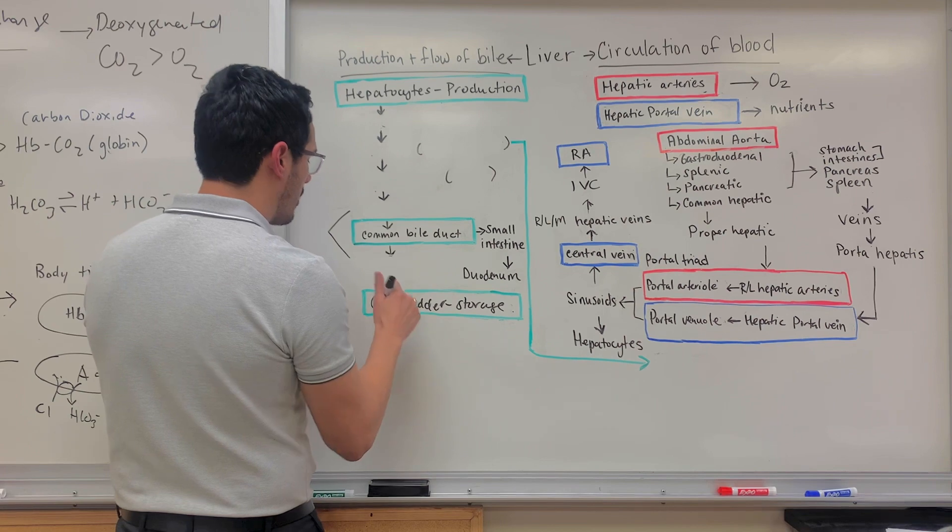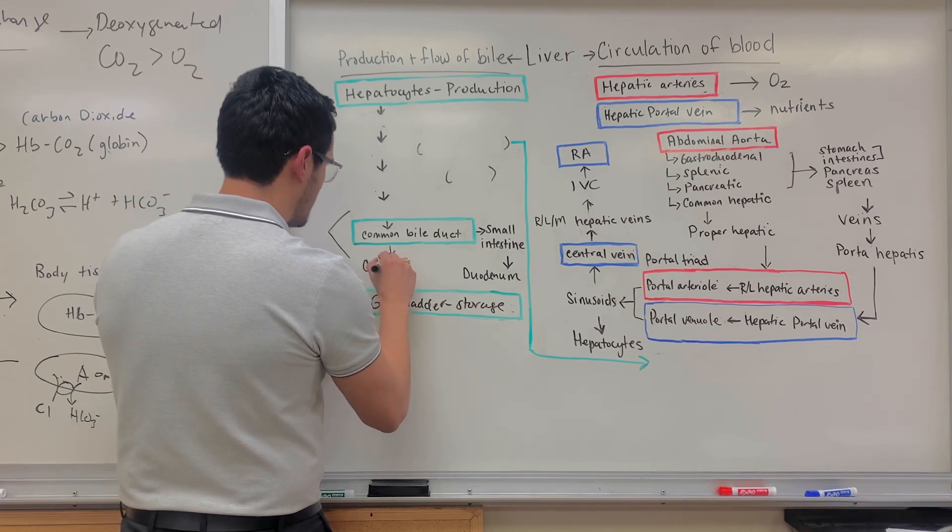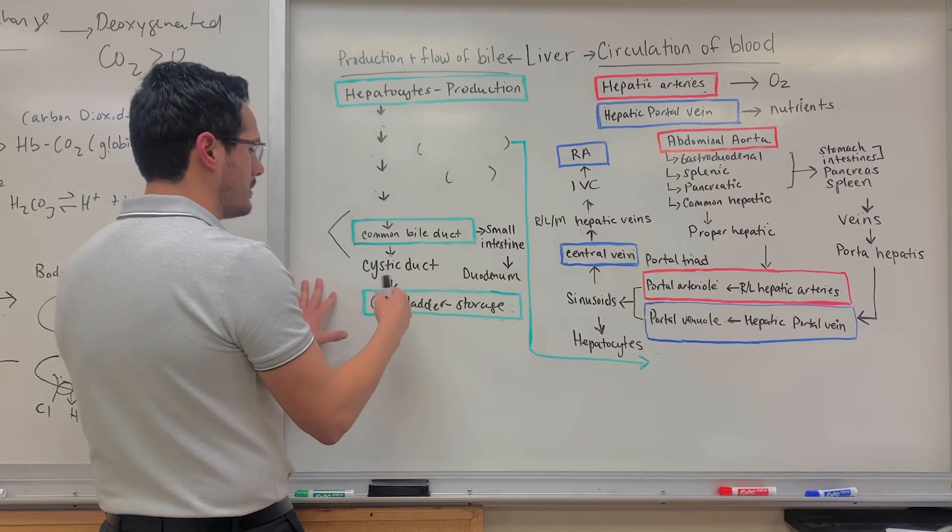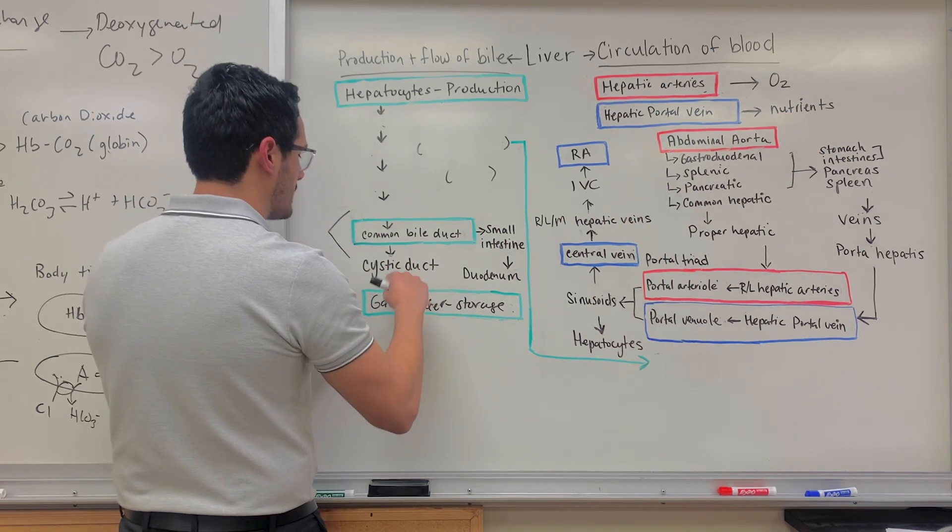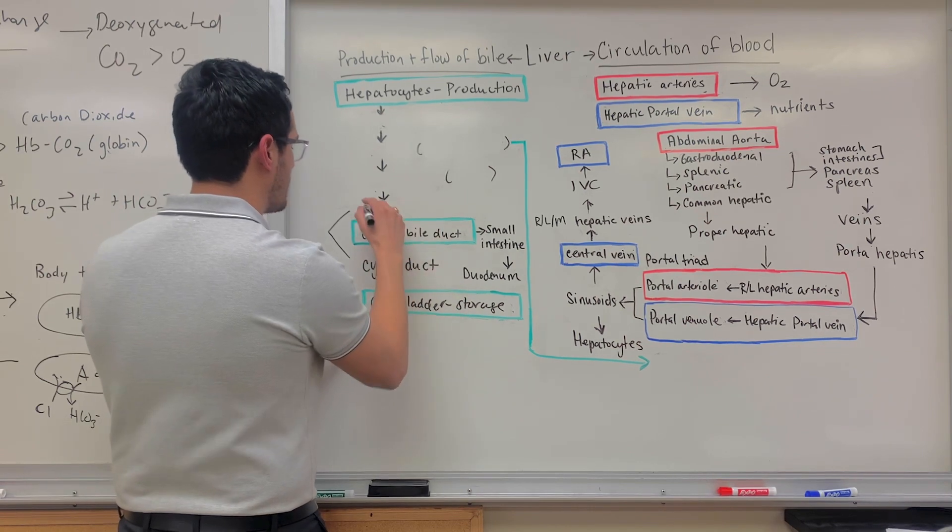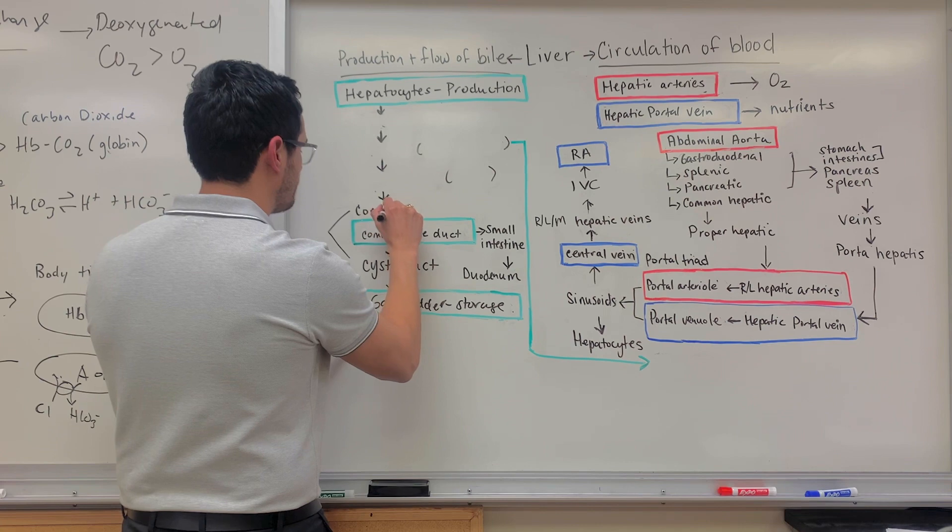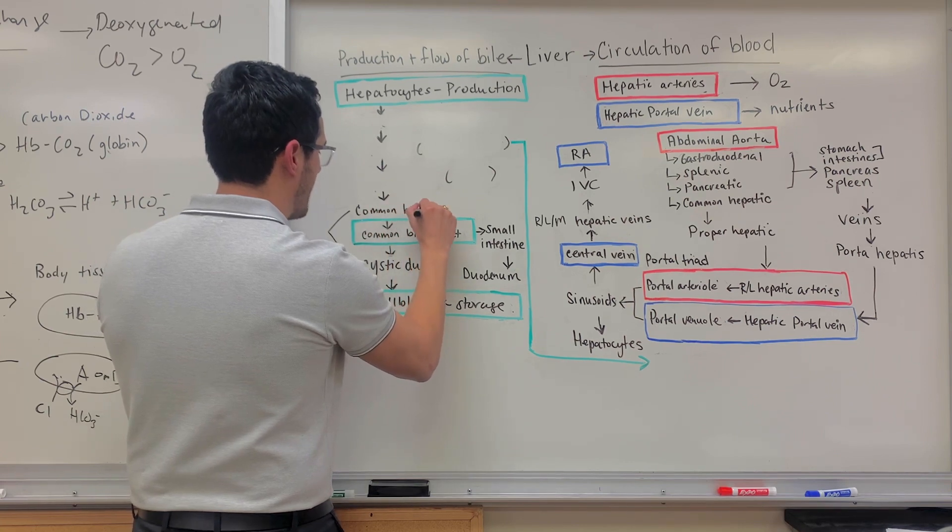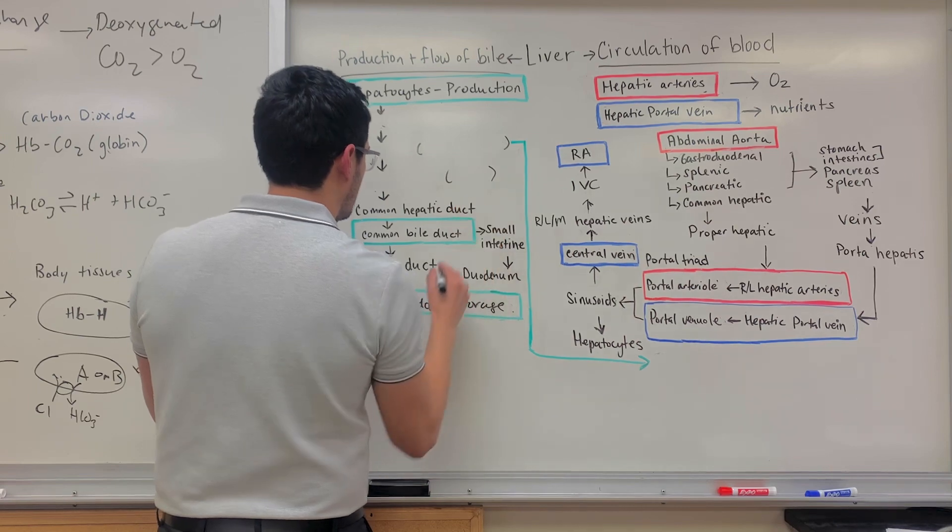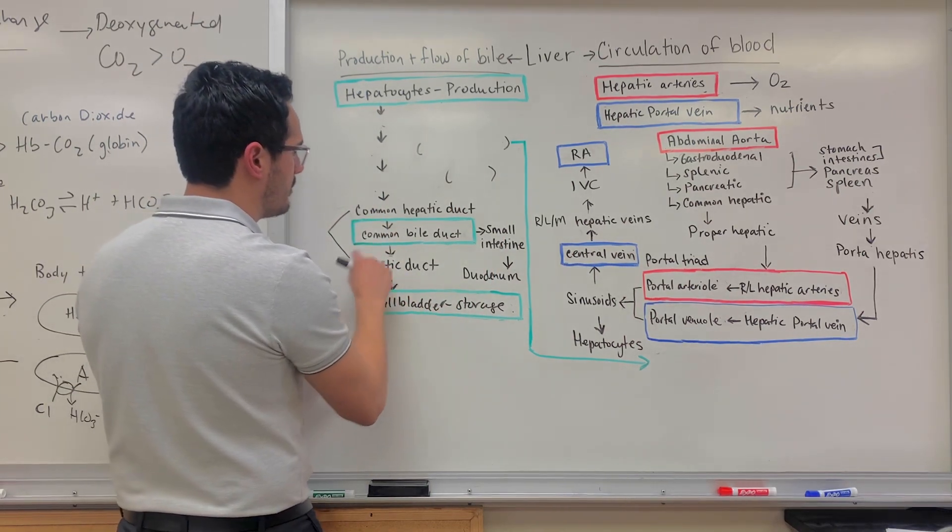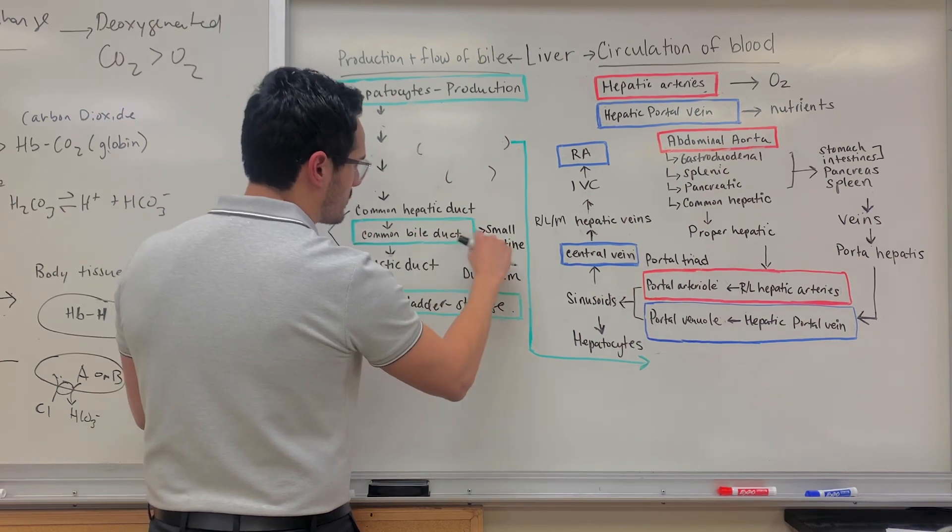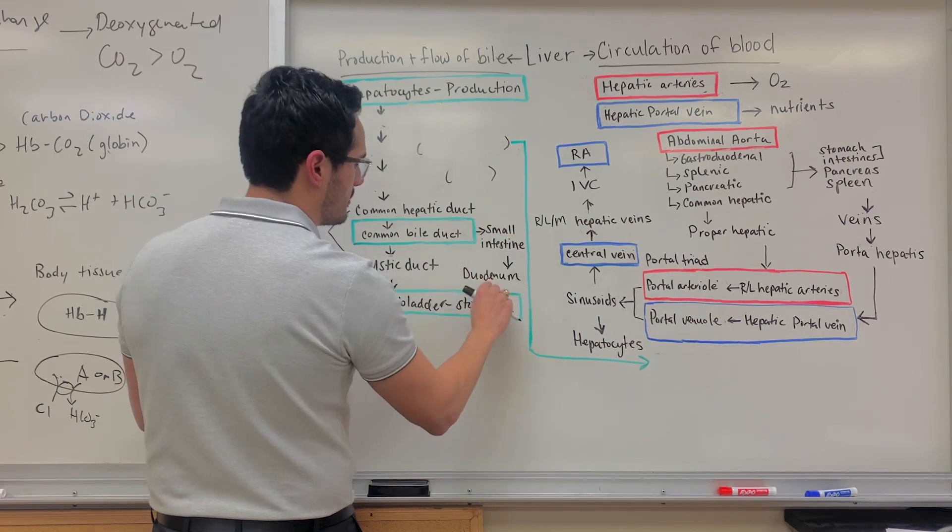So coming off of the gallbladder is what's known as the cystic duct. So you have the cystic duct, which is where bile is coming from, and then it gets to the common bile. And then you also have something which is known as the common hepatic duct. So the cystic duct and the common hepatic duct, both of those will merge to form the common bile duct. That's what then leads into the small intestine within the duodenum.